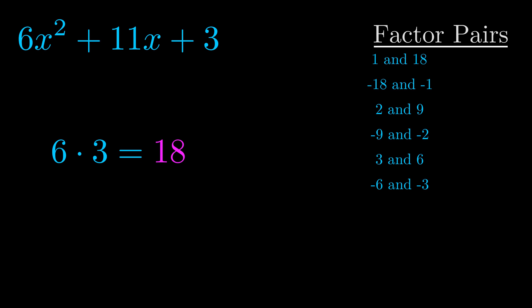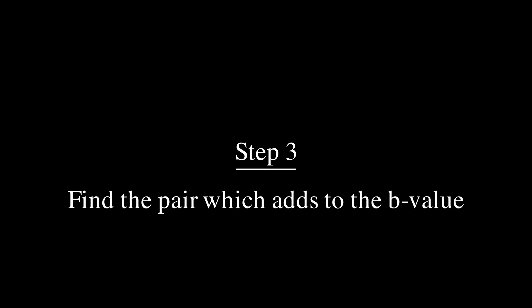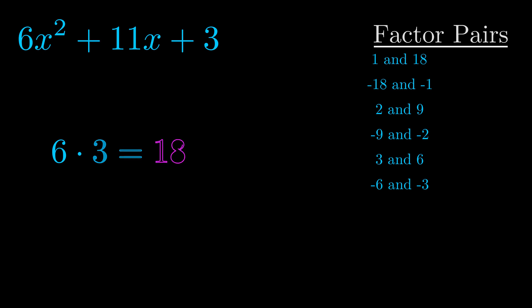Now once you have these factor pairs, the goal is to find which of these pairs adds to the b value. The b value is the coefficient on the x term, that's the middle term, the one that we haven't done anything with yet. And really this is the only factor pair that we need.